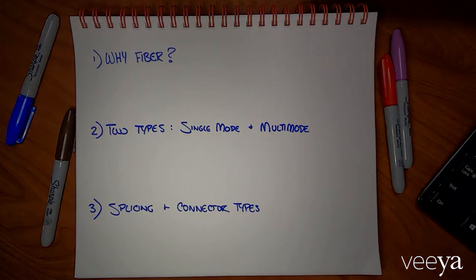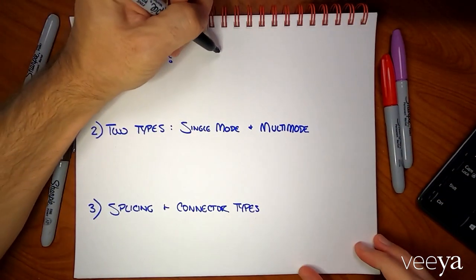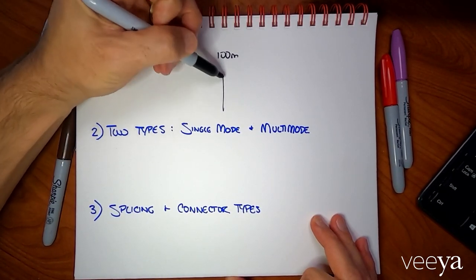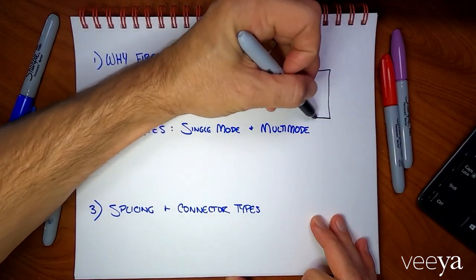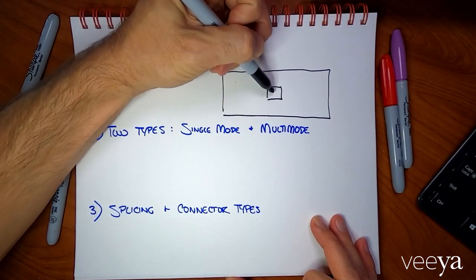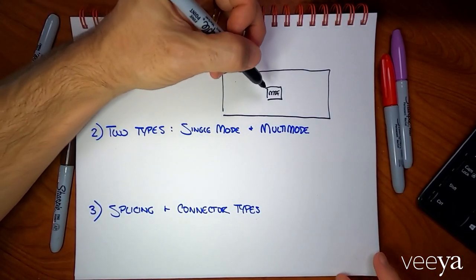Let me start off with the first question: why do we use fiber optic cabling? The main reason, the number one reason, is because of distance. When you're cabling a building, ethernet cable can only go 100 meters. So oftentimes, if you have a really large building, you'll create a room called the MDF where all your network equipment and everything else goes.